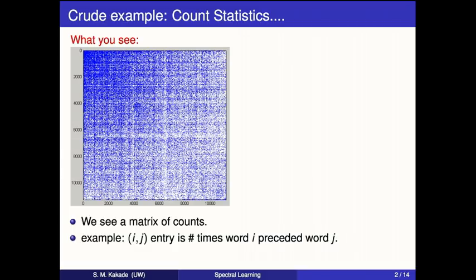Take an example from natural language processing: a count matrix of co-occurrences of words. Think of a matrix where one axis represents one word and another axis represents another set of words, and we put a dot if words i and j co-occur. Many of the data we have look like this — it can be an integer rather than just a dot. Our job is to figure out some structure in this data.